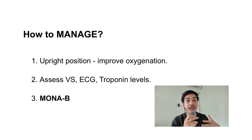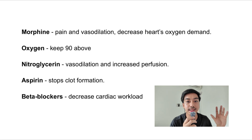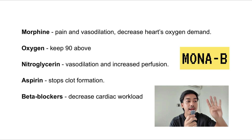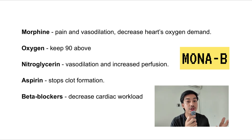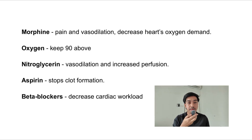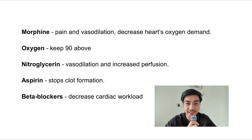Number three, we have to give certain medications. The mnemonic is MONA-B: M for morphine, O for oxygen, N for nitroglycerin, A for aspirin, and B for beta blockers. In the event of acute MI, we give morphine for pain, vasodilation, and to decrease the oxygen demand of the heart. The heart does not need to work hard, so we use morphine to lower the oxygen demand.